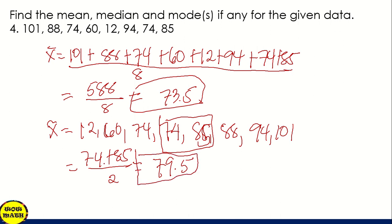And of course, we can see that the mode is 74, since we have two 74s in our data. So the mode is 74. To summarize: the mean is 73.5, the median is 79.5, and the mode is 74.